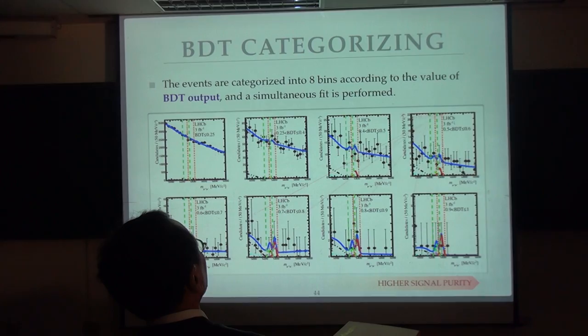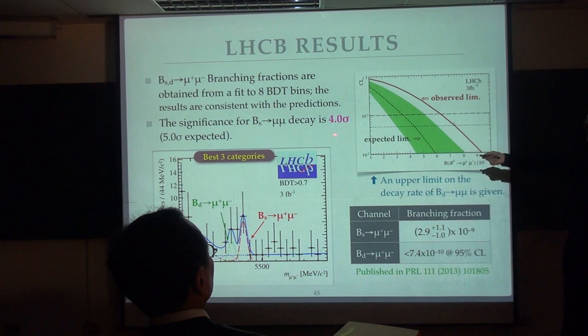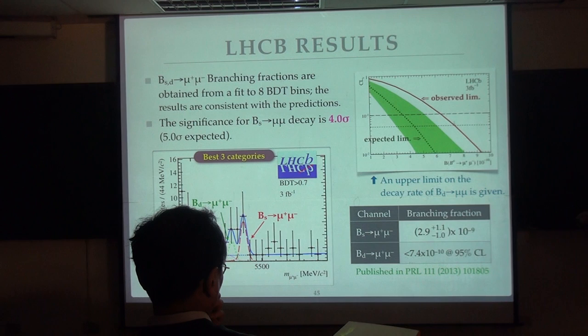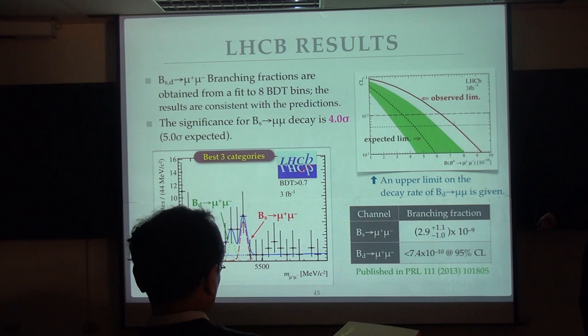And this is the result. So, also, BD is also like two sigma. So, also give a limit. So, basically, this is also published in PRL back-to-back to the CMS result. So, together. So, anyhow, this is the upper limit plot.